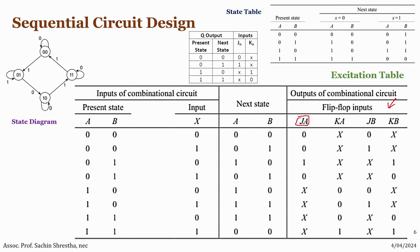In order to solve for JA, KA, JB, and KB, we can make use of K-maps. Here we can see the values zero through seven, with inputs A, B, and X. Let's define the K-map for JA.